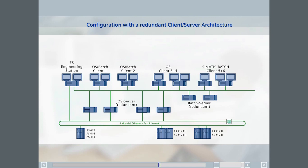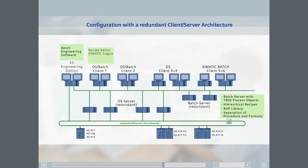The combined OS and batch clients from the previous example are extended by two OS clients without batch and two batch clients without OS. The batch engineering software is once again installed on the engineering station. The two redundant batch server PCs both have the server software and the options hierarchical recipes, ROP library, and the separation of procedure and formula installed on them. The recipes will be created on client one, which therefore has the recipe editor and Sematic logon, but is without a batch control center.